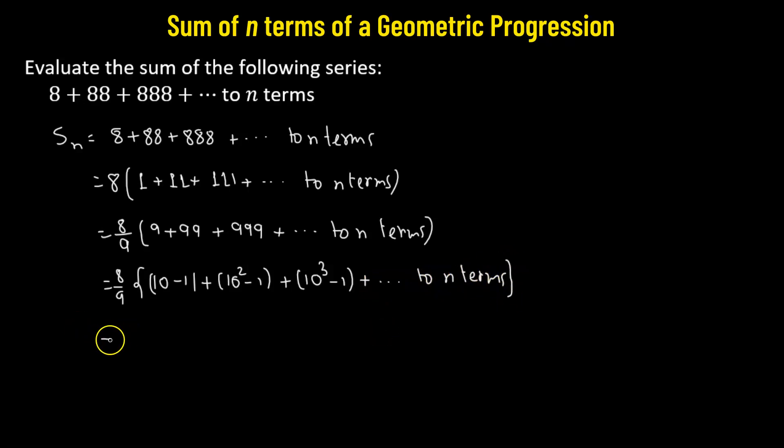Then we have 8 over 9 multiplied by... we'll combine the first term of each of the terms. So that means we have 10 plus 10 squared plus 10 cubed, this adds up to n number of terms.